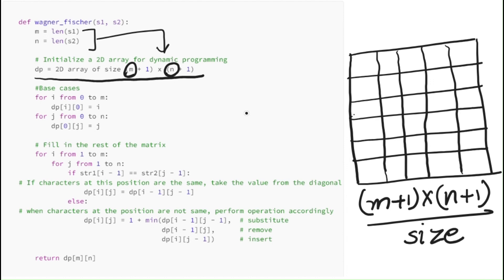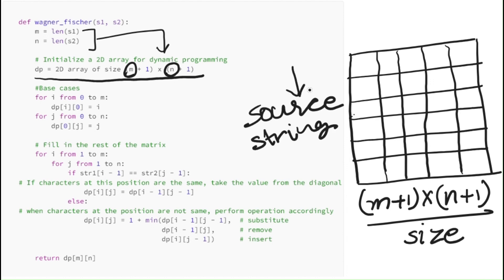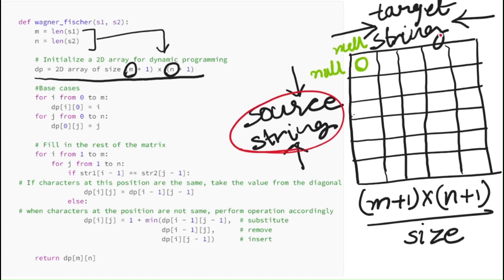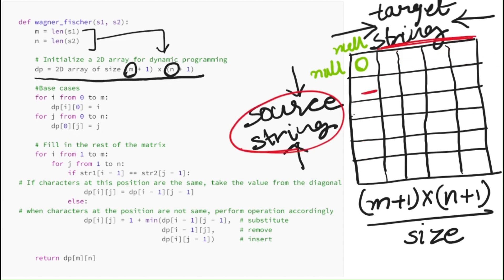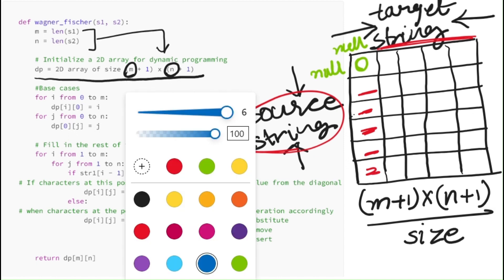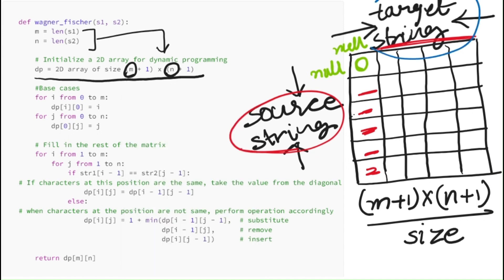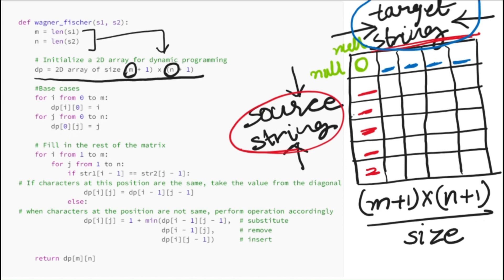Next, we set the base cases. Rows indicate the number of characters in the source string, and columns indicate the number of characters in the target string. The base case is represented by the first row and first column of the matrix. For each character in the source string, we calculate the distance to an empty target string — representing how many characters we need to delete from the source to make it empty. Similarly, for each character in the target string, we calculate the distance to an empty source string, representing how many characters we need to insert to make it equal to the target.